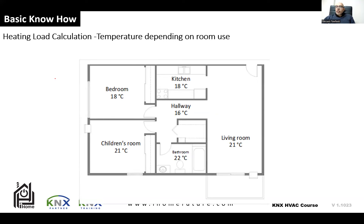Now, the heat load calculation is about allowing comfortable zoning in a house, villa, or office. Standards specify that the optimum temperature for the kitchen should be 18°C, and for the bedroom also 18°C. These standards are worldwide but may vary by country — for example, Europe versus the Middle East.